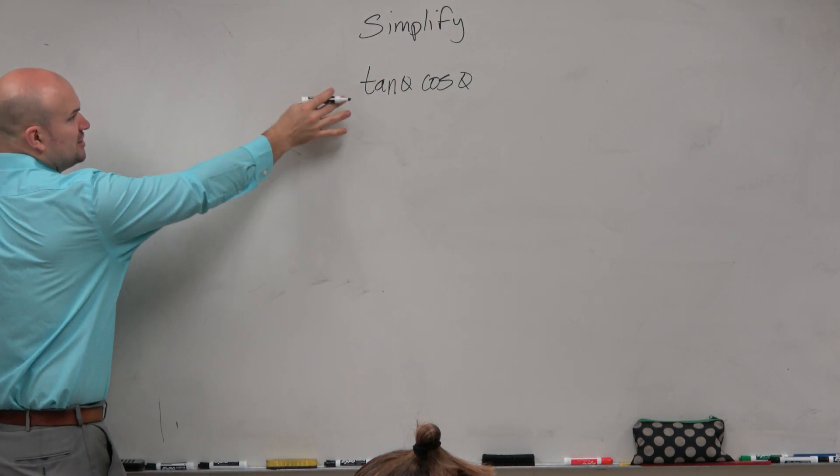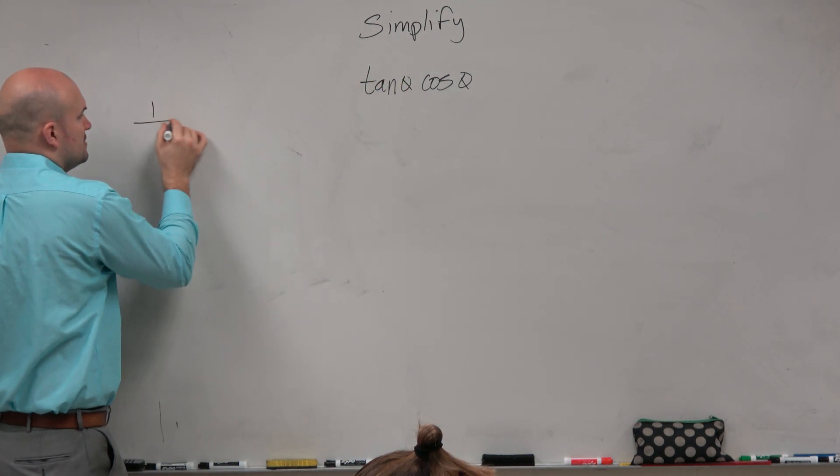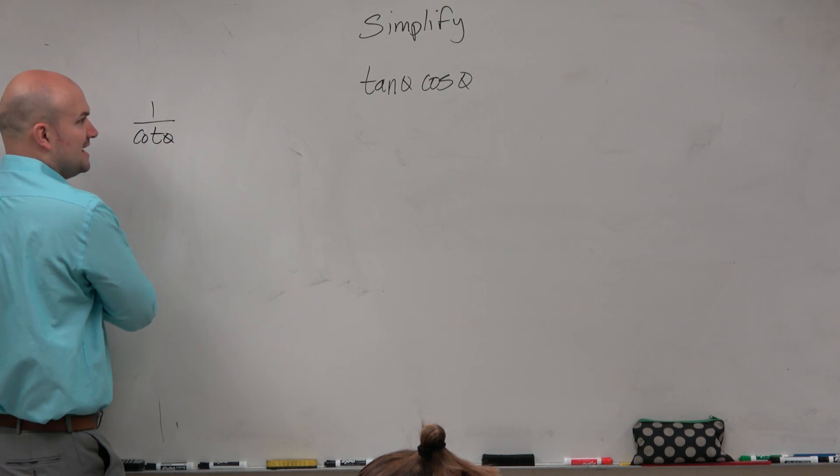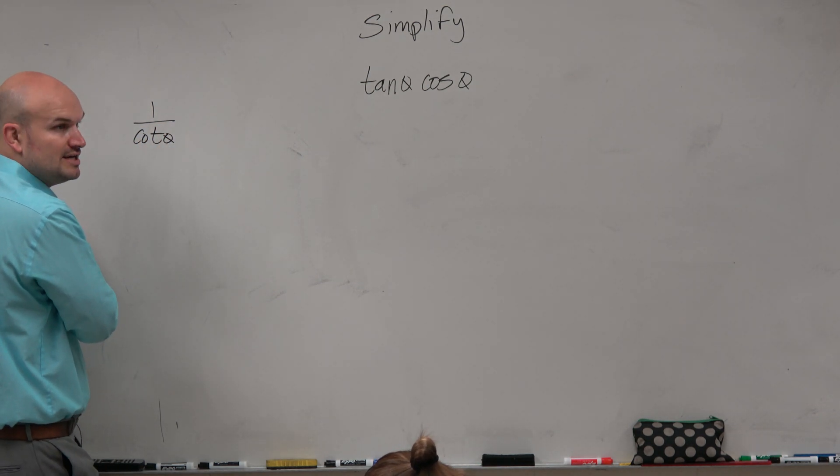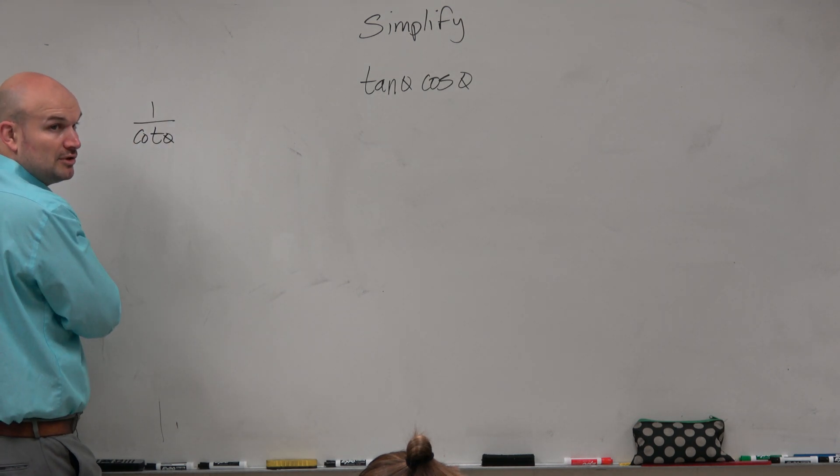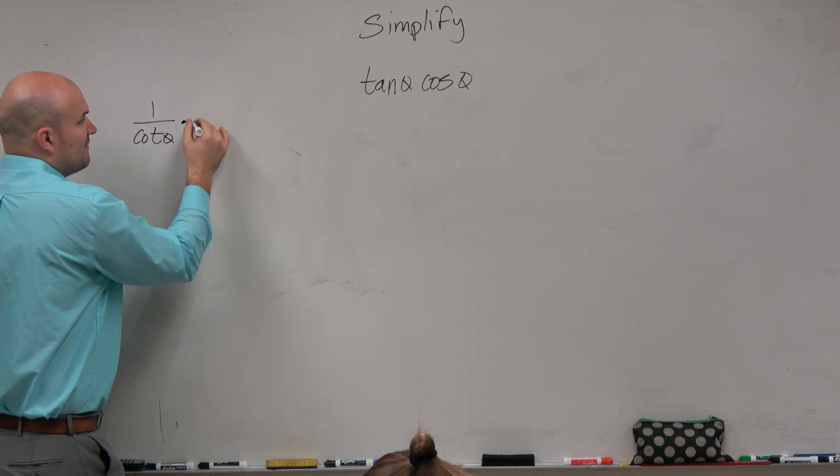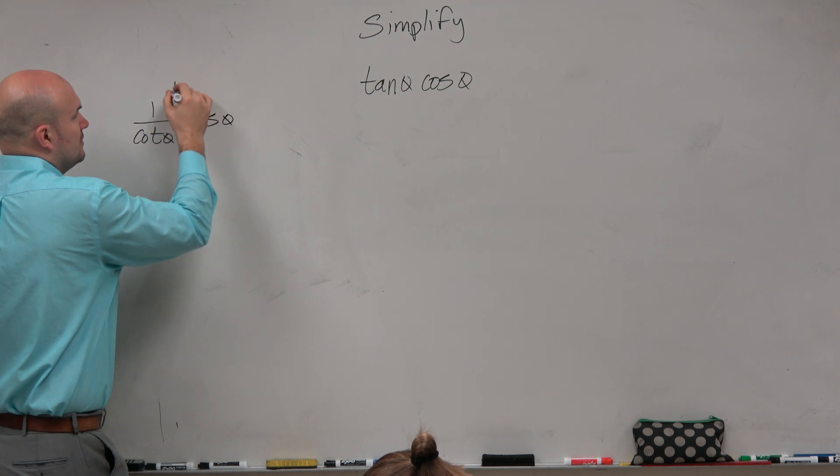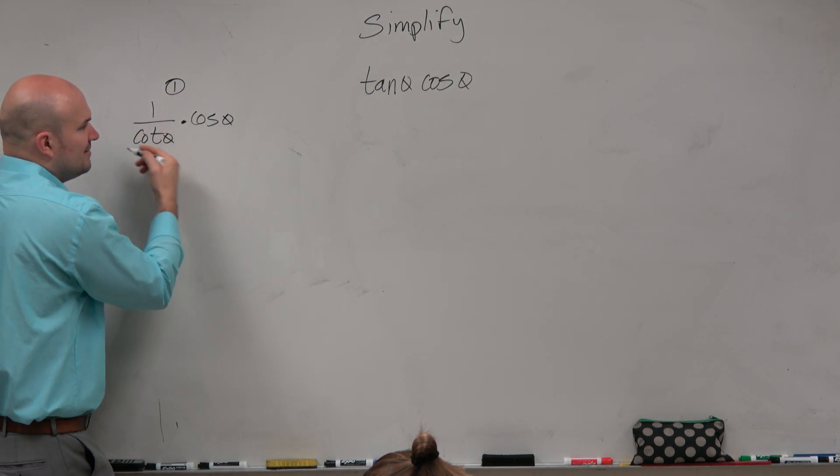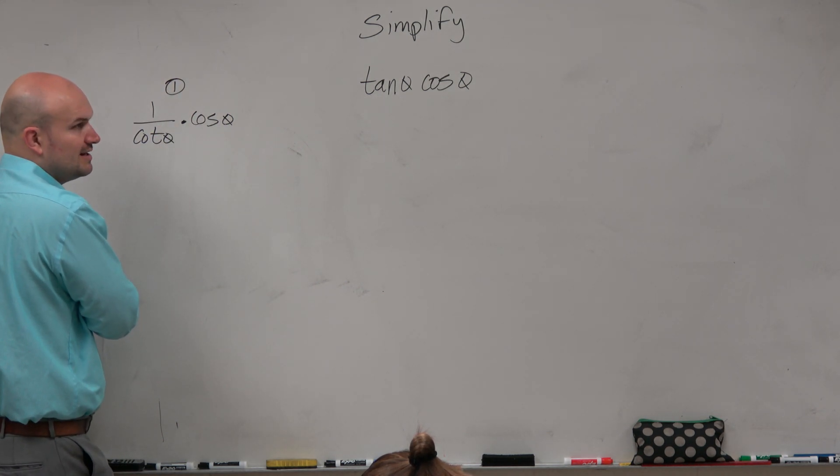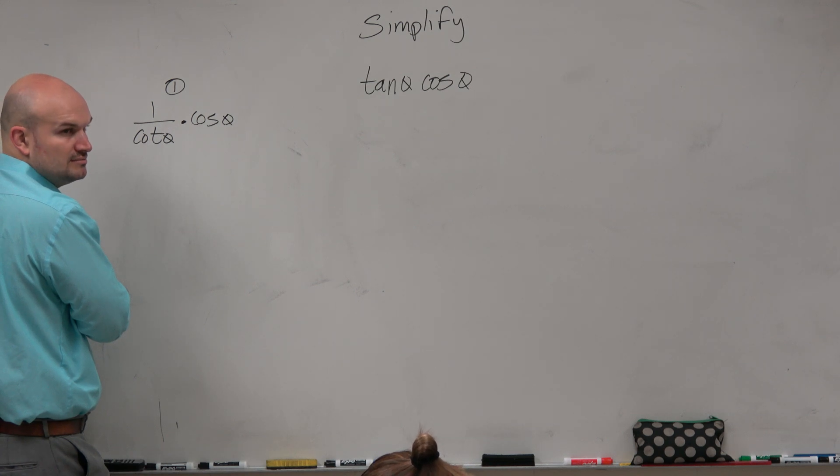So let's just convert tangent to cotangent. Wouldn't you guys agree that tangent of theta is the same thing as 1 over cotangent of theta, based on the reciprocal identity? Right? So if I just did that there, however, that doesn't really help me simplify anything, at least how it's written there. Do you guys agree? It doesn't make anything easier or simpler.